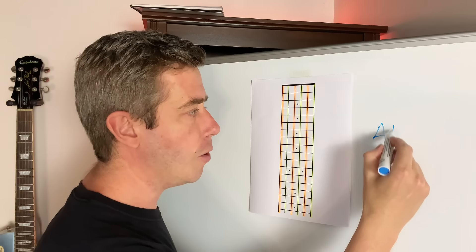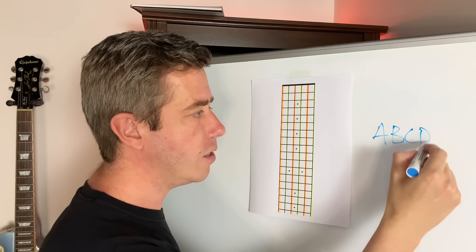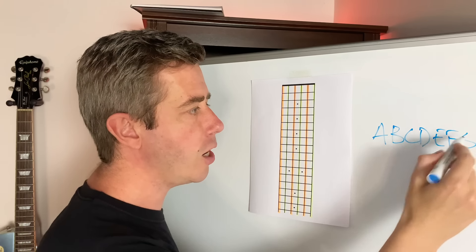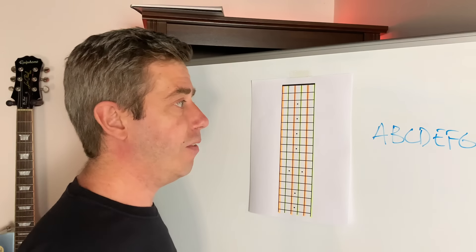And then it goes to B and then to C and then to D and then to E, F, G. Same as the normal alphabet, right?